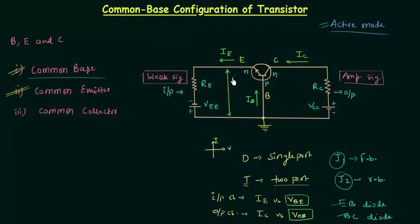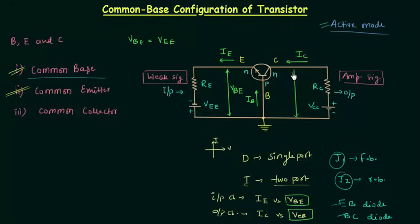VBE is the potential across the base-emitter junction. If you neglect RE, as done in the previous presentation for simplicity, then VBE equals VEE. Similarly, VCB is the potential difference across the base and collector, and VCB equals VCC if we neglect RC.